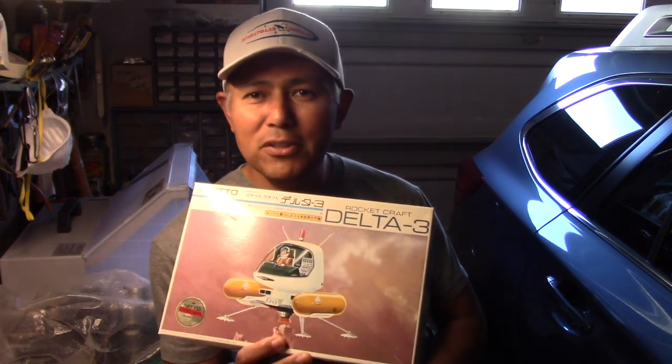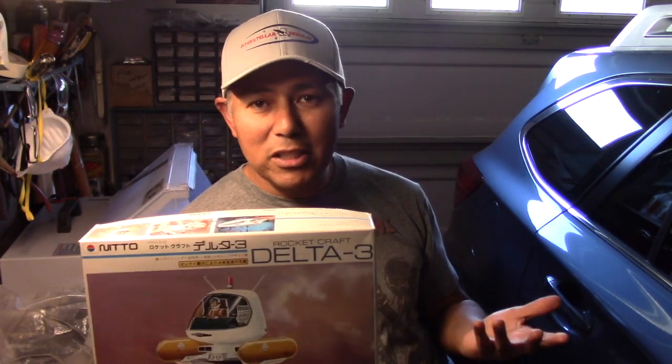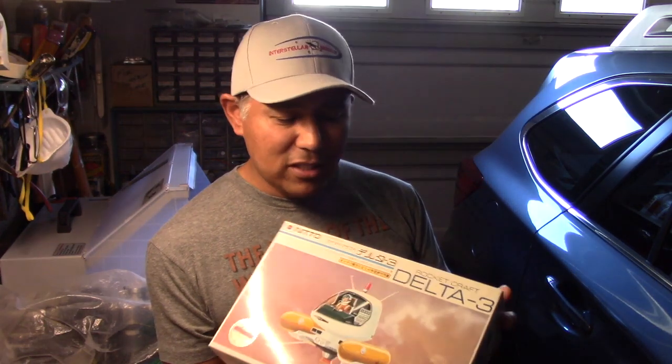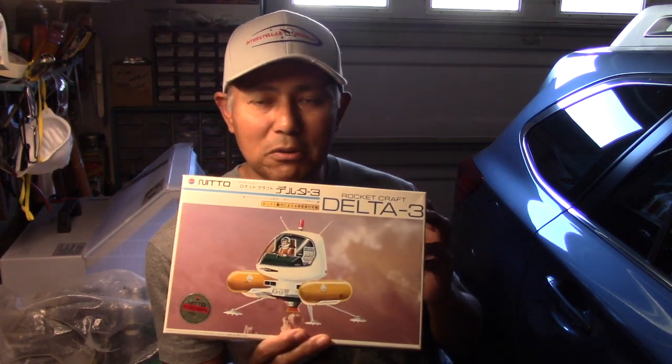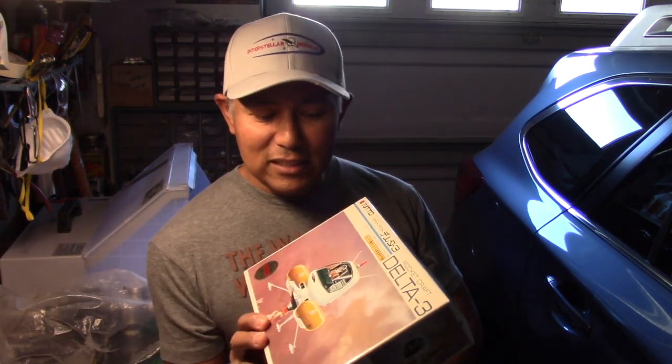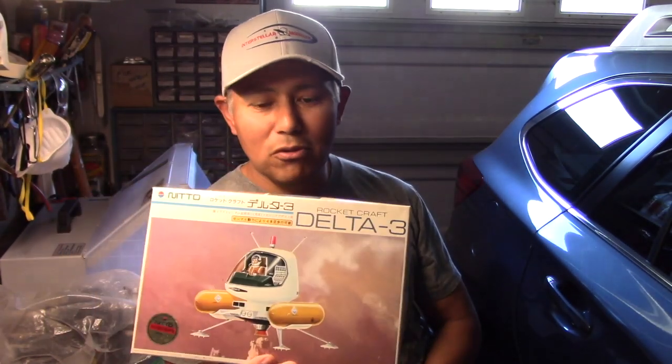This is a vintage model kit that I'm going to be building from NITO. It's called a Rocketcraft Delta III. This is something that I found online about a couple years ago on eBay. I really didn't know much about this company or these model kits, but I was actually just drawn to it because of the styling. It's this nice retro 1960s, 70s type styling, like the concept ships you used to envision using on the moon or on Mars.